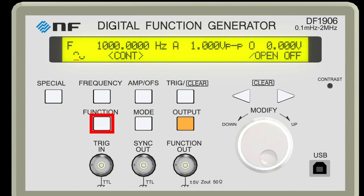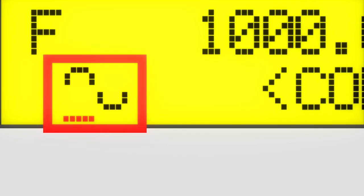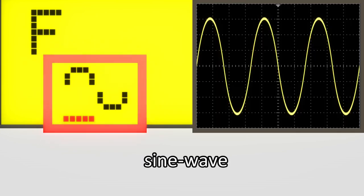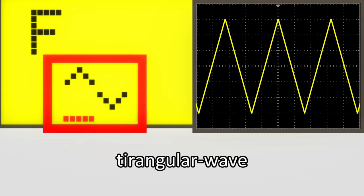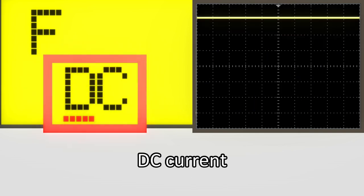Use this function button to change the waveform. The waveform is displayed on the LCD panel as a symbol or in English. Turn the dial to change the waveform. This is the sine wave. This is the square wave. This is the triangle wave. And this is the direct current.